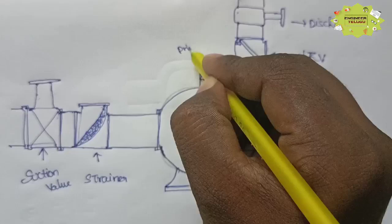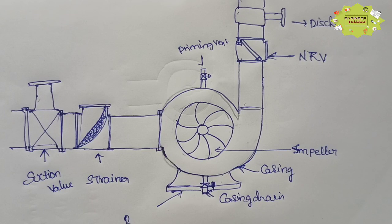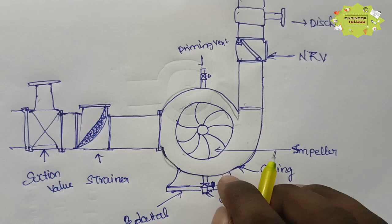This is the priming valve and this is the casing drain. And this is the pedestal. So here we have the basic components.